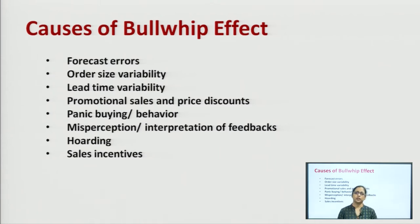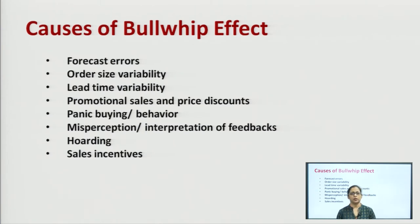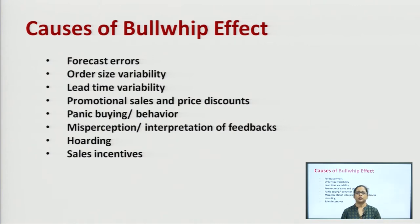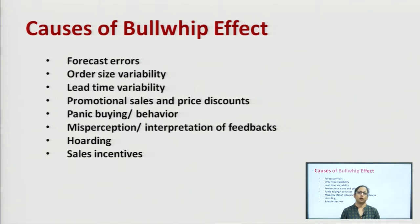The second reason is order size variability. If customers do not have standard order sizes every time — for example, as a retailer I order 20 units today and 10 units tomorrow — the producer may get confused and will likely produce in the larger quantity so they do not face any stock-out situation and can fulfill demands whenever they are raised. Because of uncertain order sizes, they are forced to produce in larger quantities.